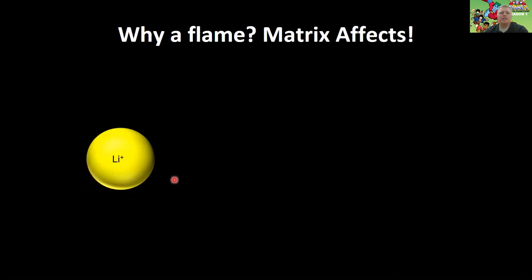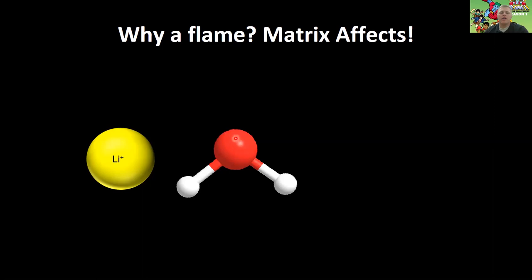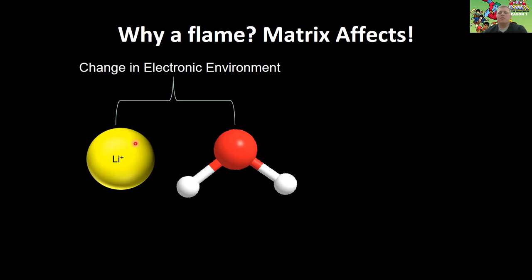Let's say you have your lithium ion just sitting there. It has electronic states where its electrons can sit, and the distance between those atomic orbitals is fixed. But if we introduce some of our solvent — say water — that lithium is positively charged, so it's going to interact with the partial negative charge on the water. That interaction is actually going to change the distance in the energy states of the different orbitals in lithium, altering the electronic environment of that lithium ion and changing the amount of energy required to excite those electrons. We've changed the absorbance wavelength.